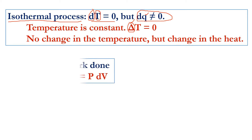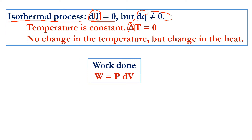Now you should know the work done formula. The work done is given by the formula W is equal to p into dV, where p stands for pressure and dV is the change in volume. Here the pressure is constant, so there is no change in pressure — this is called an isobaric process. We are going to study the work done under both isothermal as well as isobaric conditions.